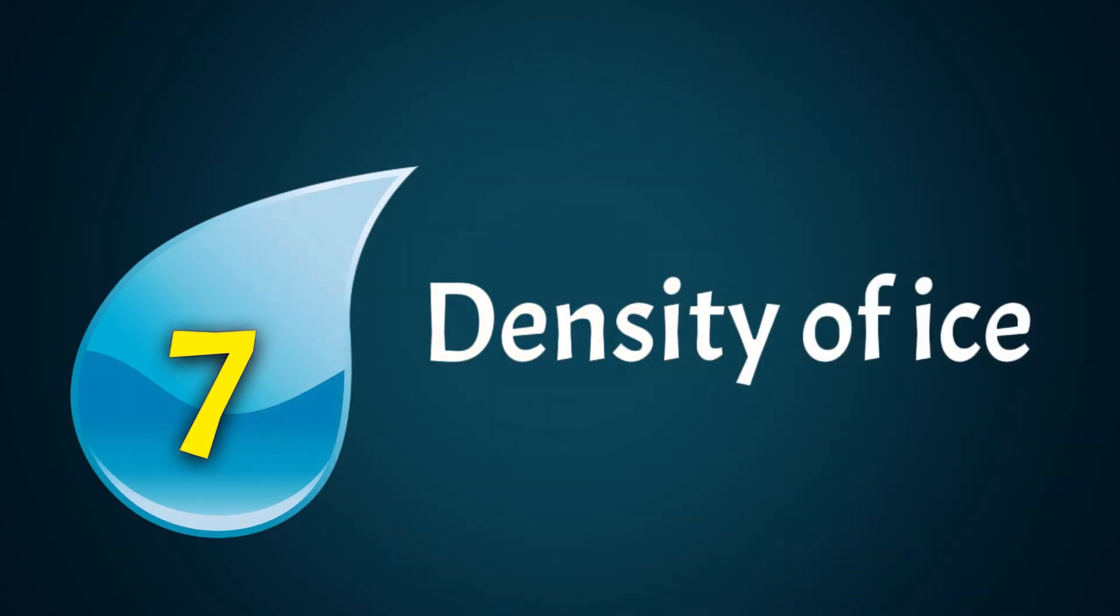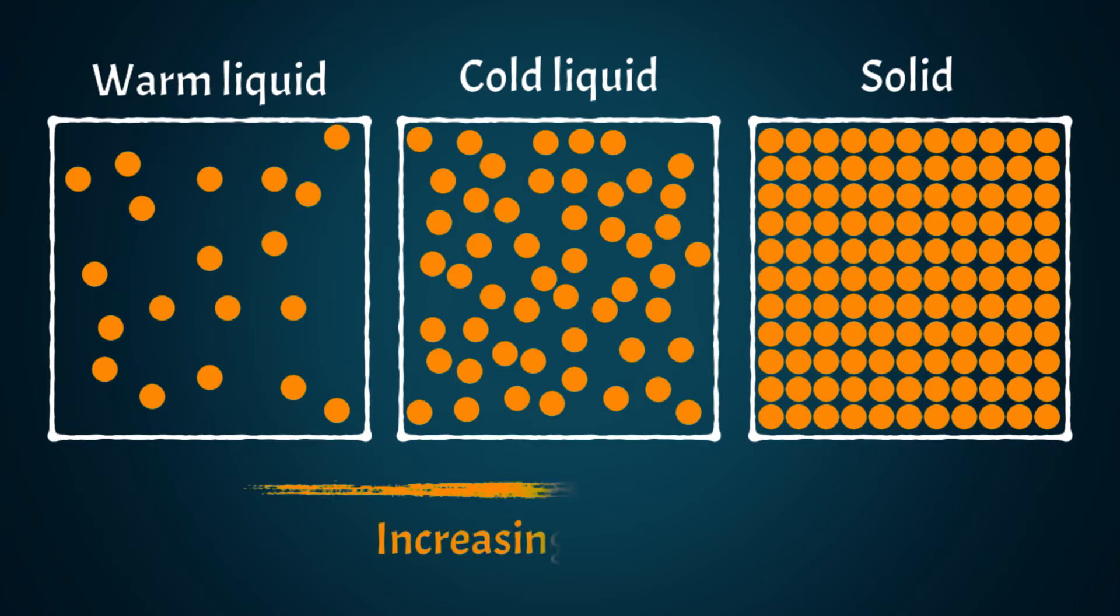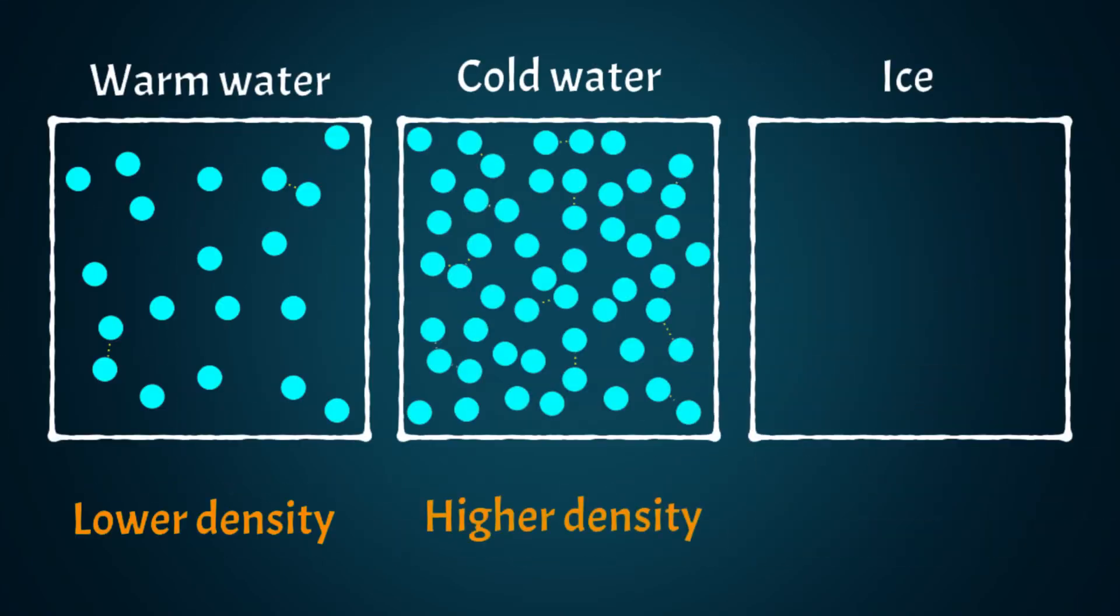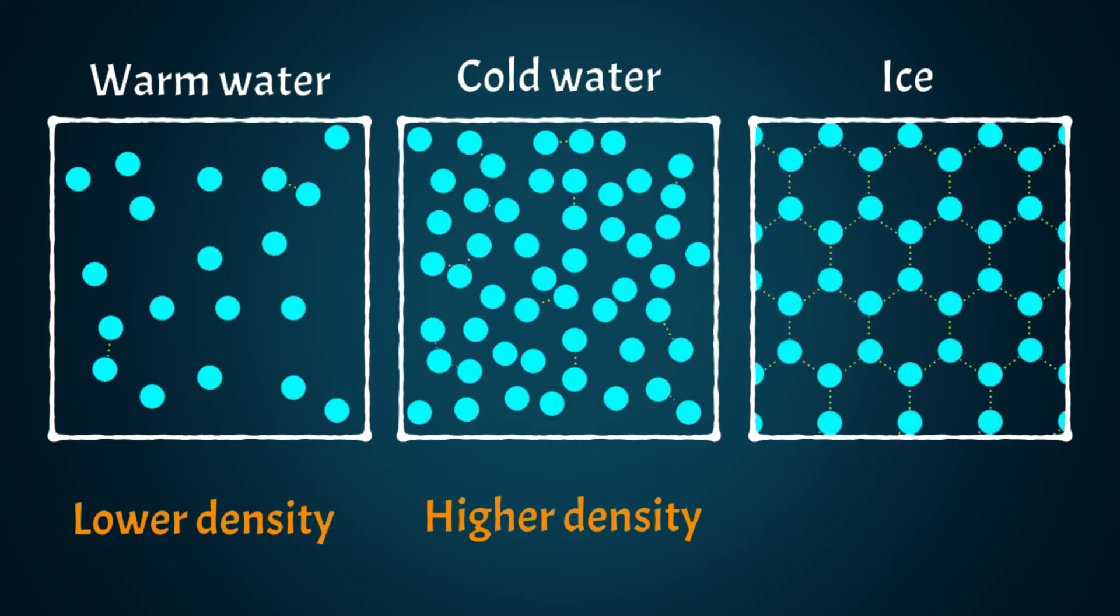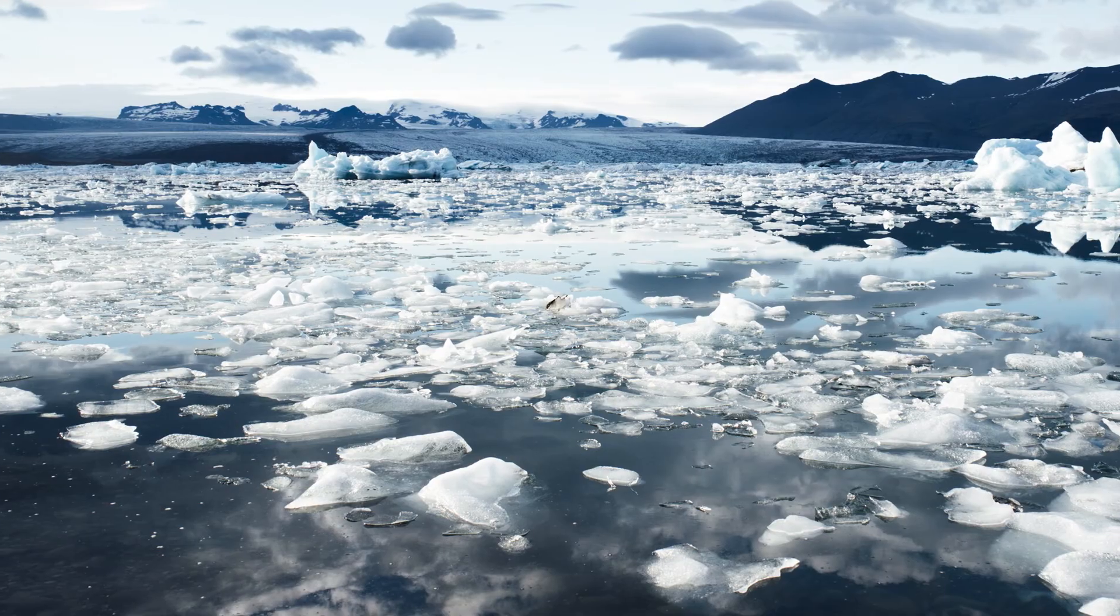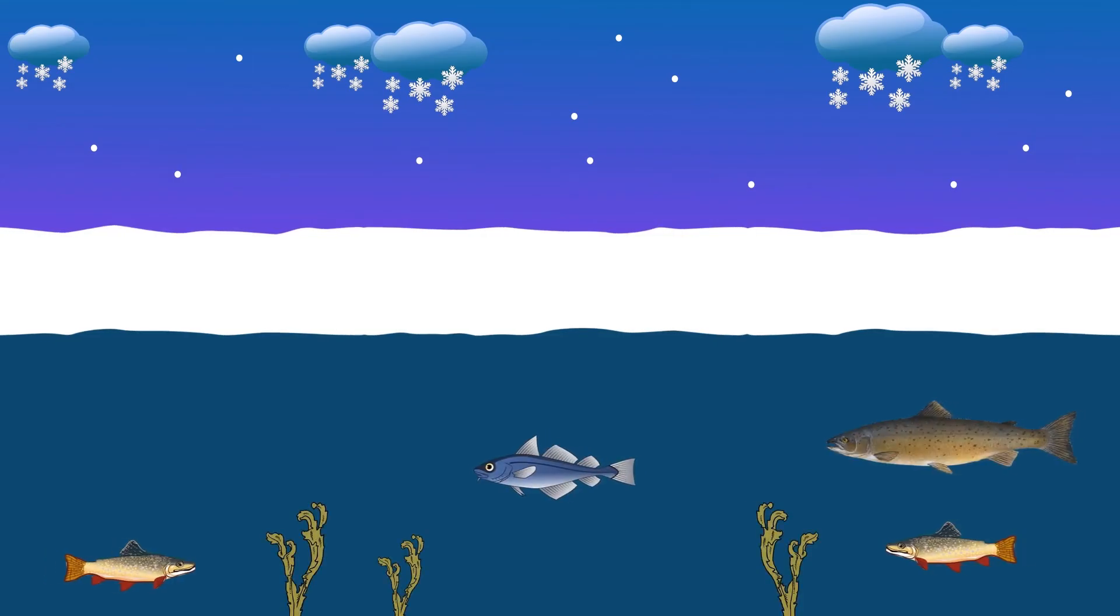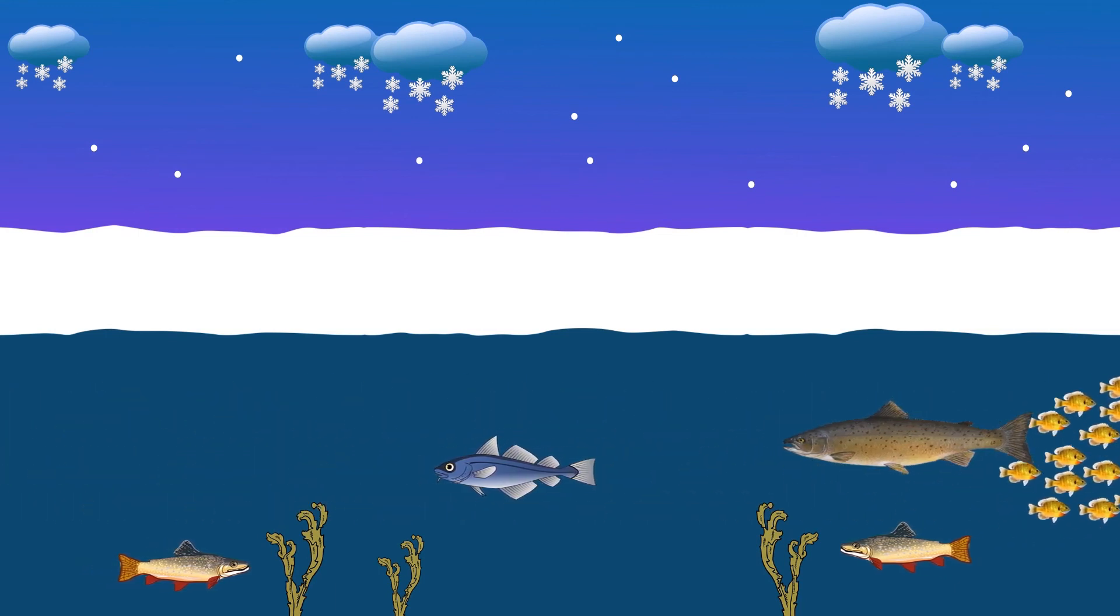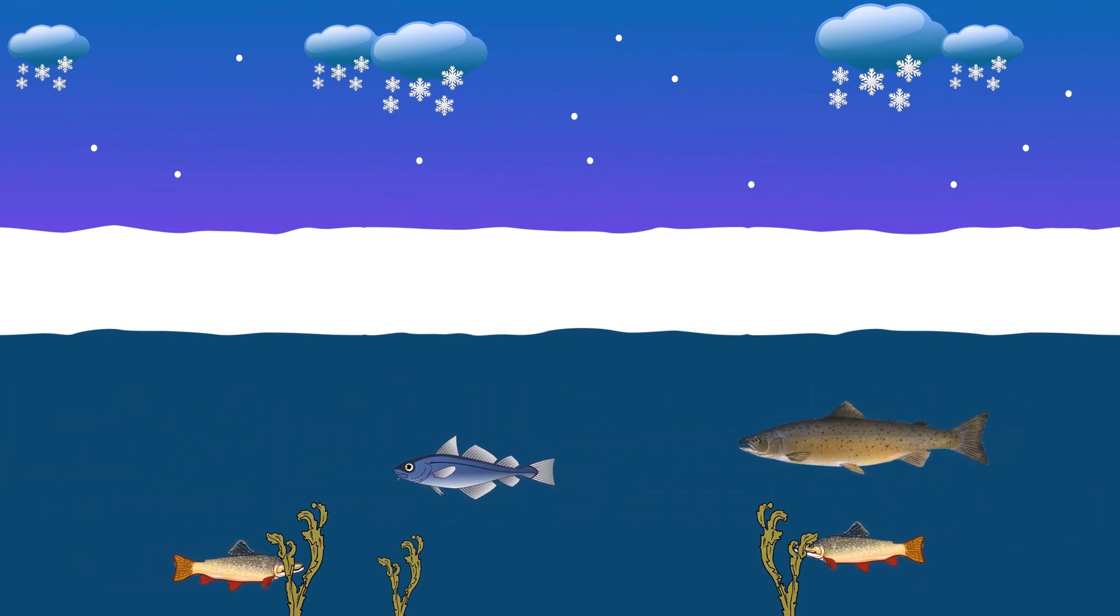When most materials go from liquid to solid, the molecules become more tightly packed, so solids tend to be more dense. With water, hydrogen bonds cause solid water to form in a crystalline structure with molecules that are relatively far apart. This means ice is less dense than cold water and, as a result, ice floats. When temperatures are below freezing, the ice that forms in a body of water floats and creates a layer at the top, insulating the water below. The area below the ice stays liquid, so fish and other organisms can survive even in freezing conditions.